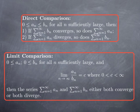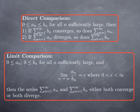For direct comparison, if we have two sequences a_n and b_n of eventually non-negative terms, and a_n is always less than or equal to b_n for all sufficiently large n, then if the series with the larger terms converges, the series with the eventually smaller terms converges as well. On the other hand, if the series with the eventually smaller terms diverges, then the series with the eventually larger terms diverges as well.